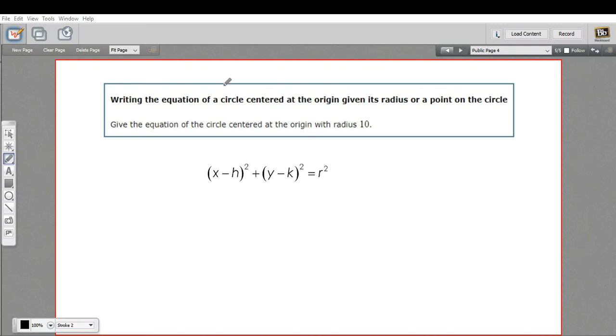In this problem, we're being asked to write the equation for a circle given its center and its radius. So here we have a radius of 10, and the center is at the origin, so the center is 0, 0.